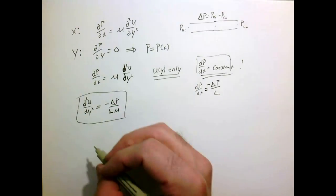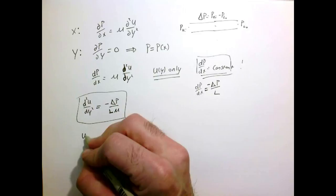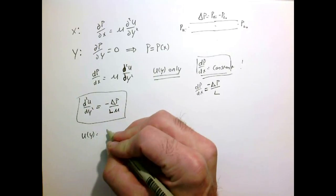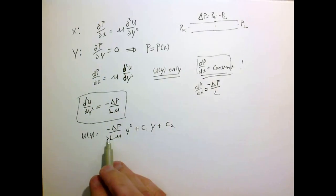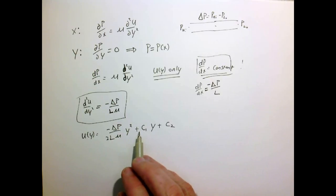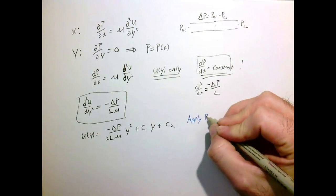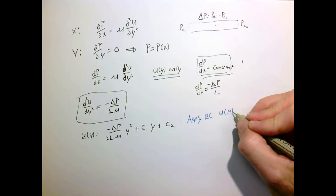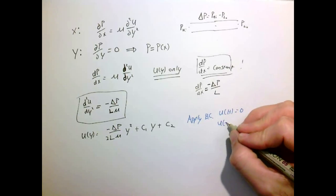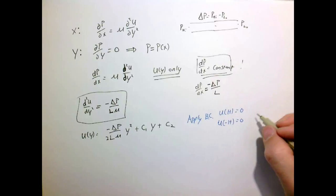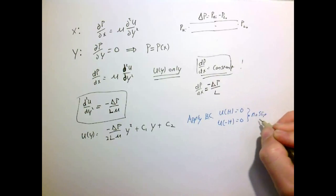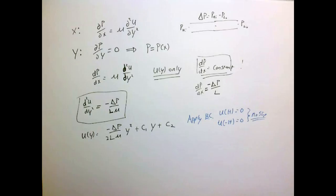Since everything on the right-hand side is a constant, we can integrate twice to get u as a function of y. The result is a quadratic in y plus a constant C1 times y plus another constant C2. To find these constants, we apply the boundary conditions: u equals zero at the top plate (y = +h) and u equals zero at the bottom plate (y = -h) — the no-slip condition, meaning no fluid slip at the walls.